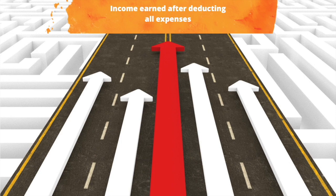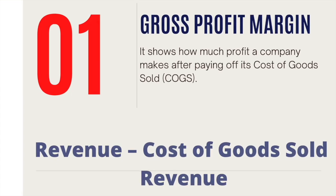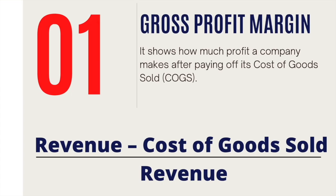Profit has different classifications: gross profit, operating profit, and net profit. We are going to discuss the profitability ratios of the company. It shows how much profit a company makes after paying off its cost of goods sold.